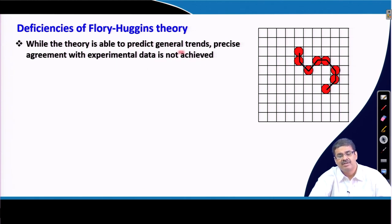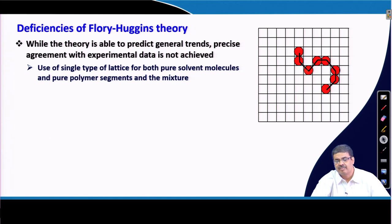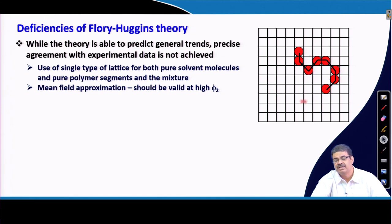This is because several assumptions were made during derivation of Flory-Huggins theory. For example, a single type of cell was utilized for both solvent molecules and polymer segments, which may not be very applicable for polymer segments. Another assumption was that when we introduce one fragment of polymer in this 3D lattice, it was assumed that all other polymer chains already present in the lattice are distributed uniformly.